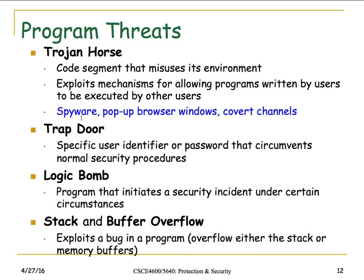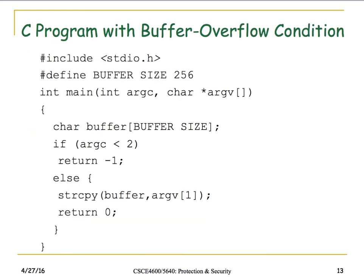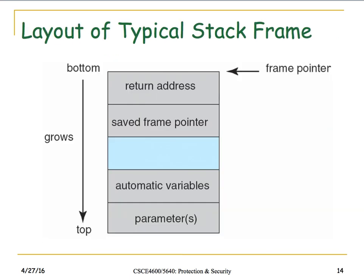Here's a simple C code example: a buffer size of 256 is defined, a character array of that size is created, and then a string copy is performed into the buffer. If the input is exactly 256 bytes, there's no space for the null terminator, which causes an overflow. The array runs from index 0 to 255, so writing the null terminator overflows the buffer boundary.